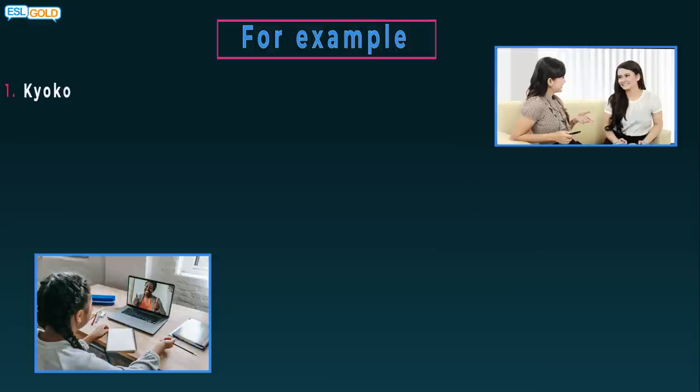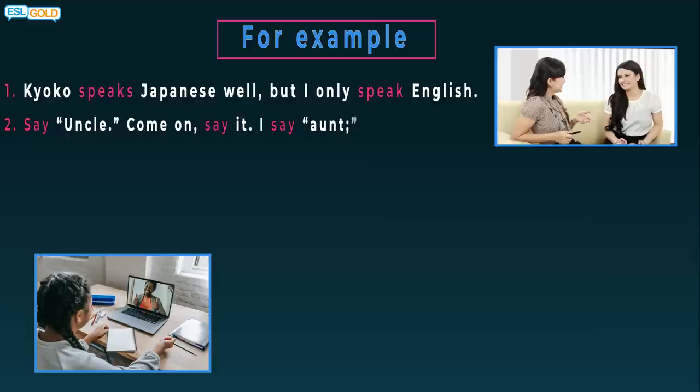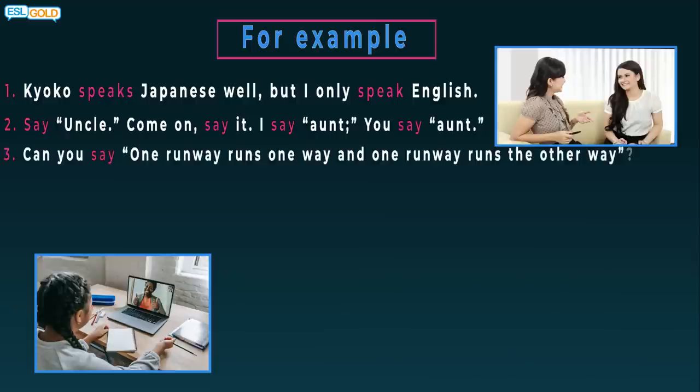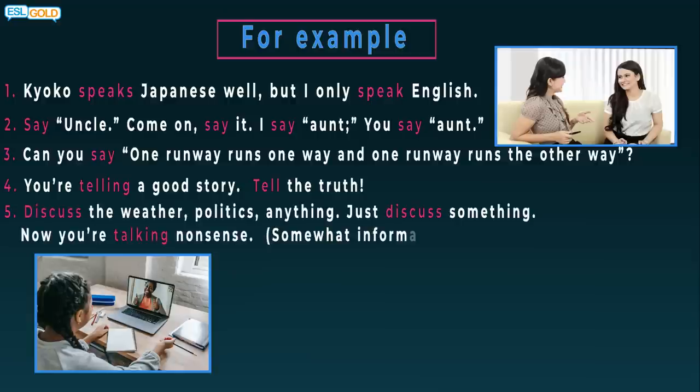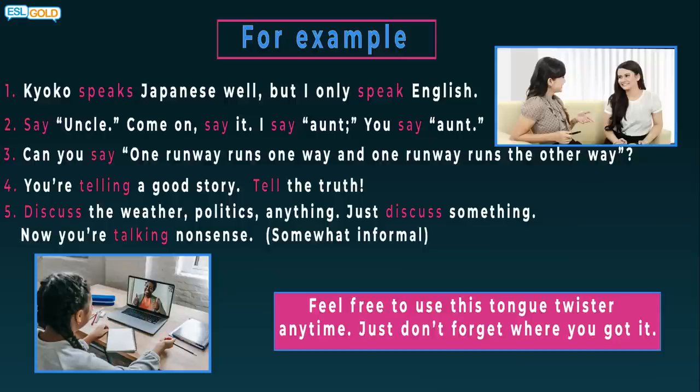For example: Kyoko speaks Japanese well, but I only speak English. Say uncle. Come on, say it. I say aunt, you say aunt. Can you say, one runway runs one way and one runway runs the other way? You're telling a good story. Tell the truth. Discuss the weather, politics, anything. Just discuss something. Now you're talking nonsense. This is somewhat informal. Feel free to use this tongue twister anytime. Just don't forget where you got it.